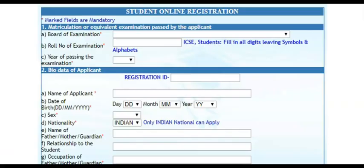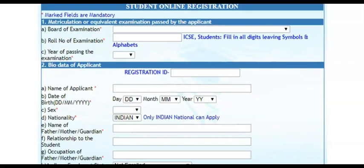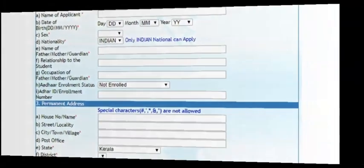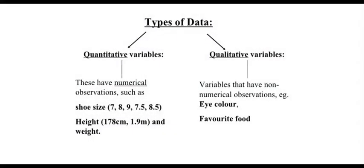Have you ever filled a form like this, or like this, or an online form like this? Then you have filled out some data. Data can be quantitative — that is, when it is numerical — for example, the size of your shoes or your height and weight.